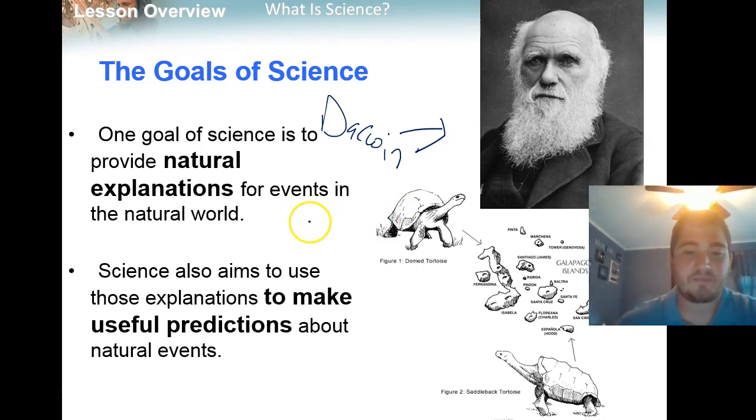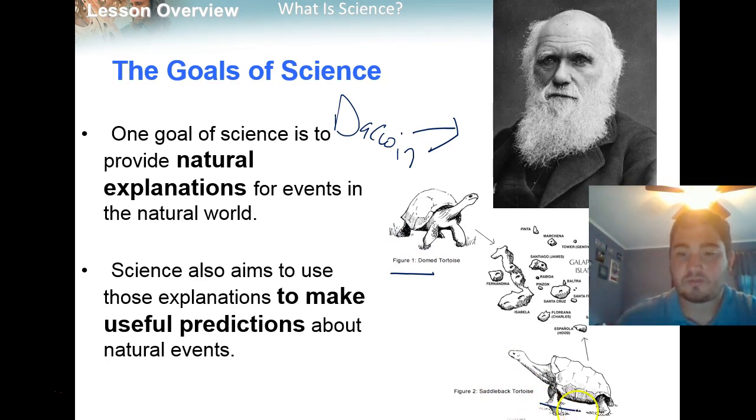The second goal of science is it aims to make useful predictions about natural events. Below our picture of Darwin here, we see two different species of Galapagos tortoises, which Darwin studied when he was in the Galapagos Islands. They're very closely related, but if you notice, they're different. This guy has a domed shell and this guy has a saddleback, a much more oval shell. Darwin's theory of evolution provides a natural explanation. These tortoises were on different islands, so they evolved to their habitat and evolved different shells.